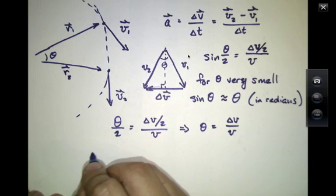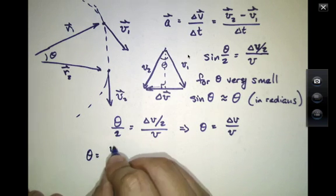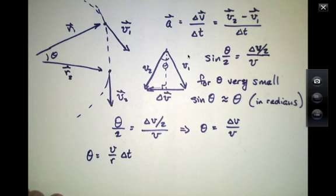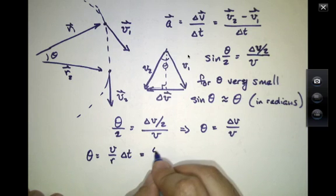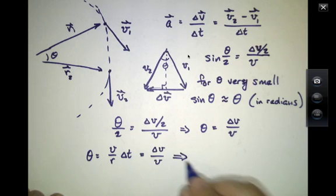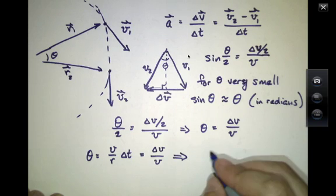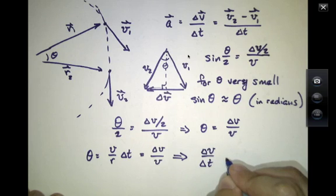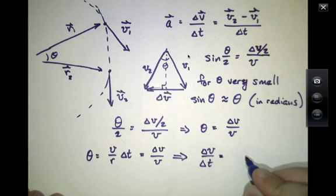Previously we learned that theta is equal to V over R times delta T. And now I'm going to set these two things equal, that's delta V over V, which means that delta V over delta T equals V squared over R.